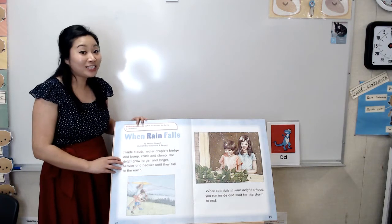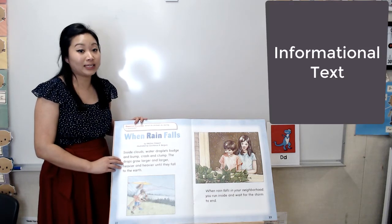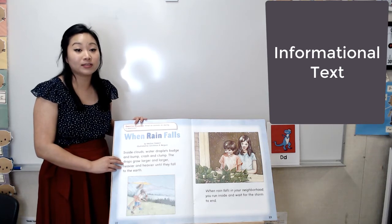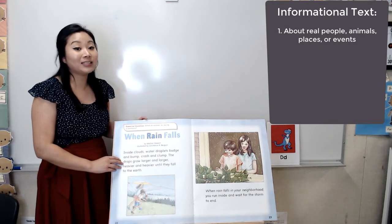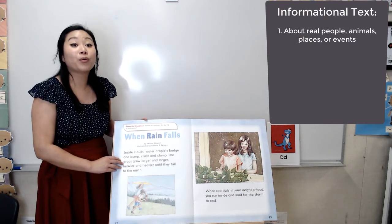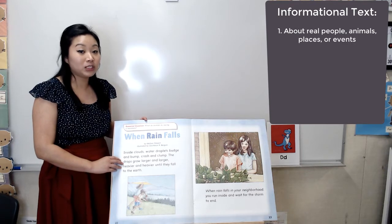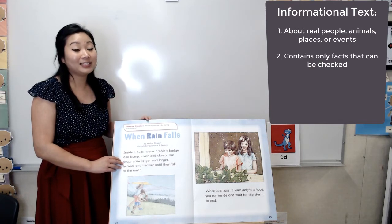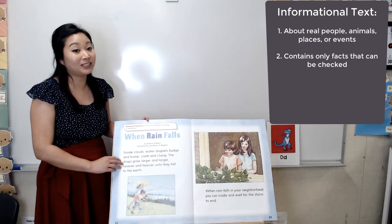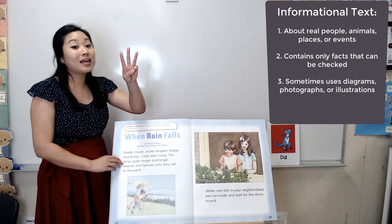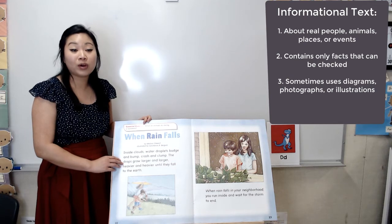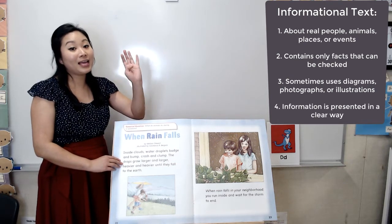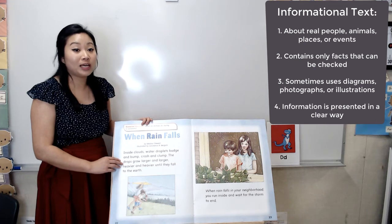The author uses italics to alert the reader to pay attention. Our selection today is an informational text. An informational text is made up of some different parts. Informational texts are about real people, animals, places, or events. They contain facts, and these facts can be checked in another source. They might use diagrams, photographs, or other illustrations, and they present information in a clear way.